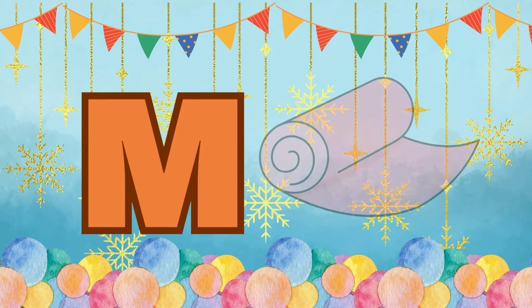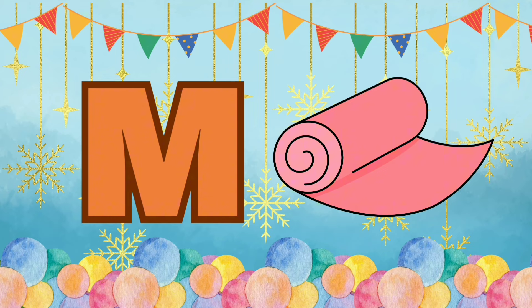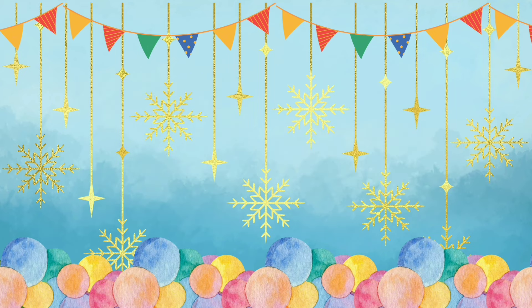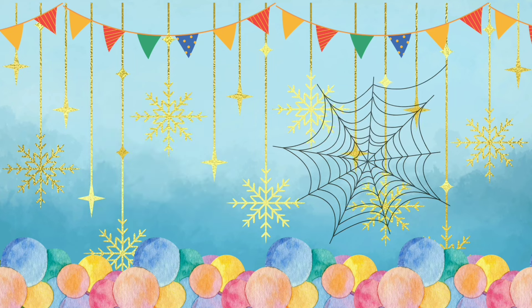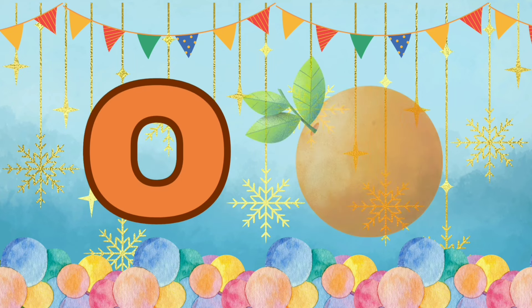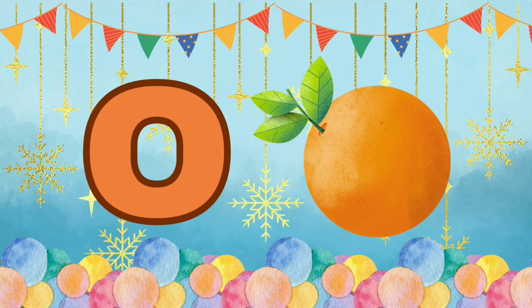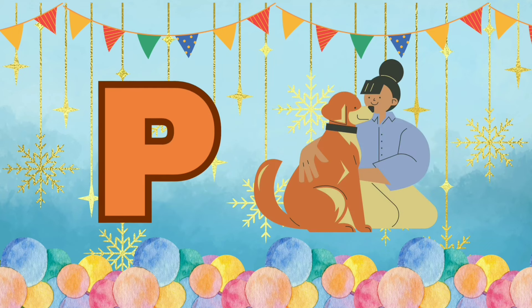M is for Mat, M-M-Mat. N is for Net, N-N-Net. O is for Orange, O-O-Orange. P is for Pet, P-P-Pet.